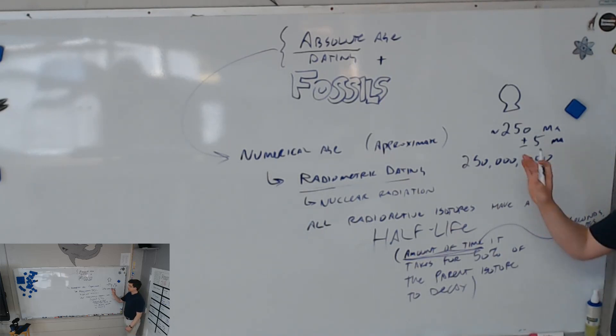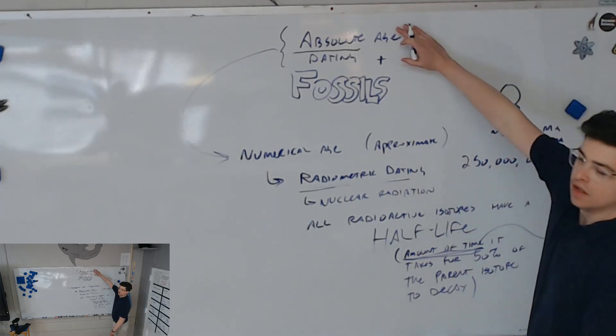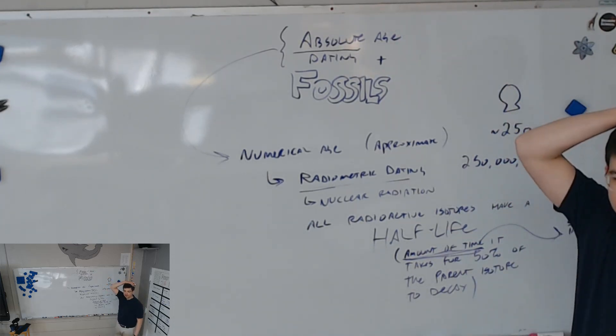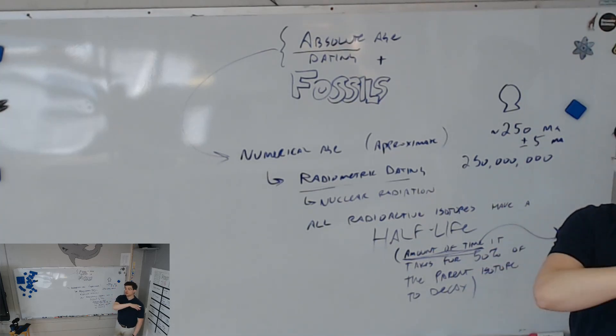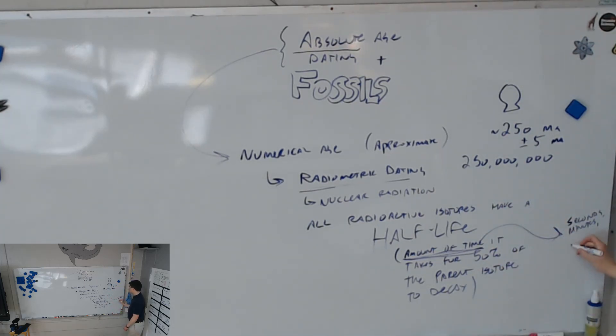What kind of units do we use to measure radioactive half-life? Any time unit - seconds, minutes, years. But usually for the ones that are useful for this, we use years, kilo annum, mega annum, and giga annum. Those are the ones that are useful in geology.